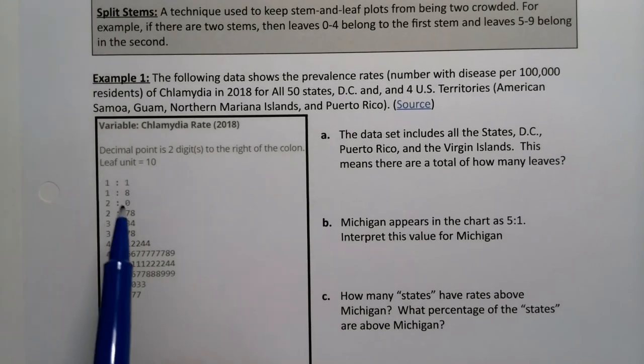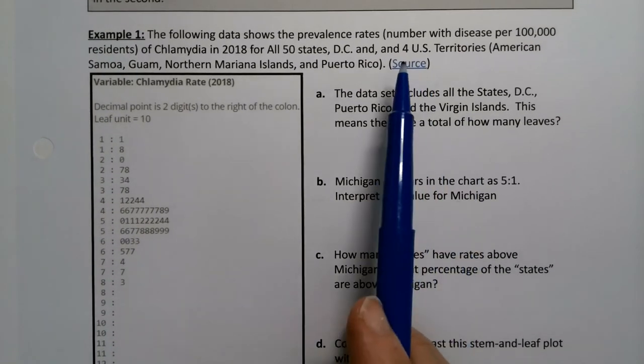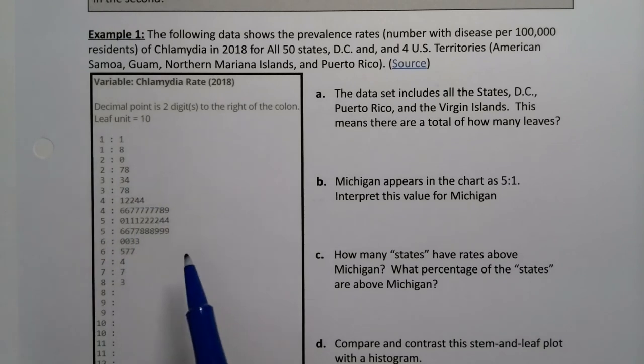Let's look at these chlamydia rates. Chlamydia is a sexually transmitted infection. It can be cured, but nevertheless it's something that is tracked by the CDC, which is the source for these data. Yes, these are real data, this is what they really are from 2018.